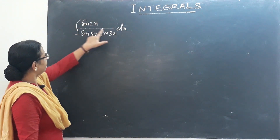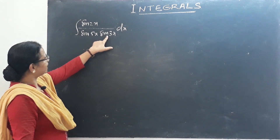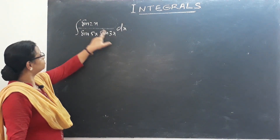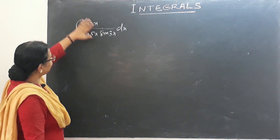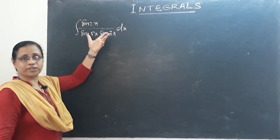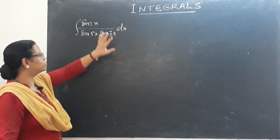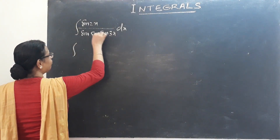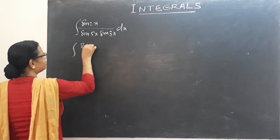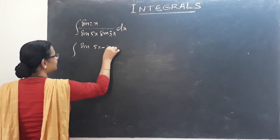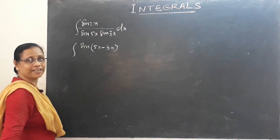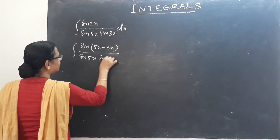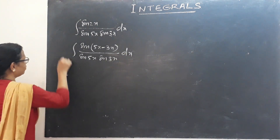The next problem: sin(2x) / (sin(5x) × sin(3x)) dx. Here we have 5x, 3x, and 2x. We need to convert sin(2x) = sin(5x − 3x) using the formula sin(A−B) = sin A cos B − cos A sin B.